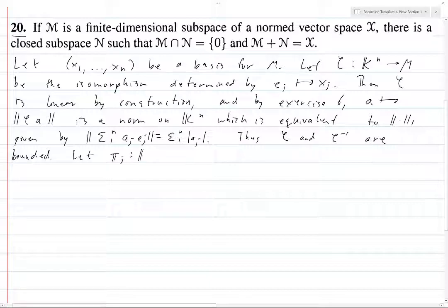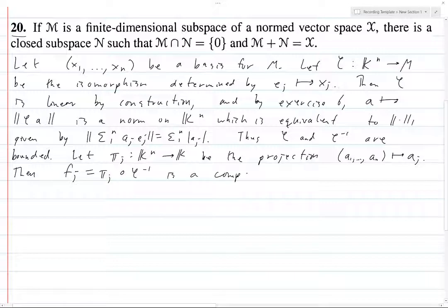Now let πⱼ from Kⁿ to K be the projection which sends, see here this is in Kⁿ, so we're going to send (a₁,...,aₙ) to aⱼ. So then fⱼ, which is just πⱼ composed with φ⁻¹, is a composition of bounded linear maps.